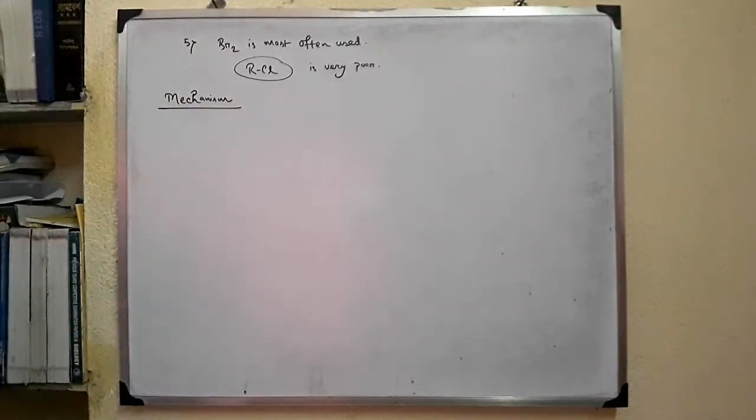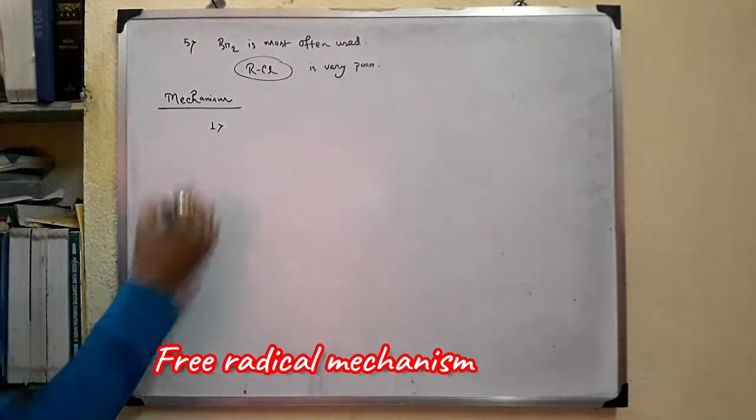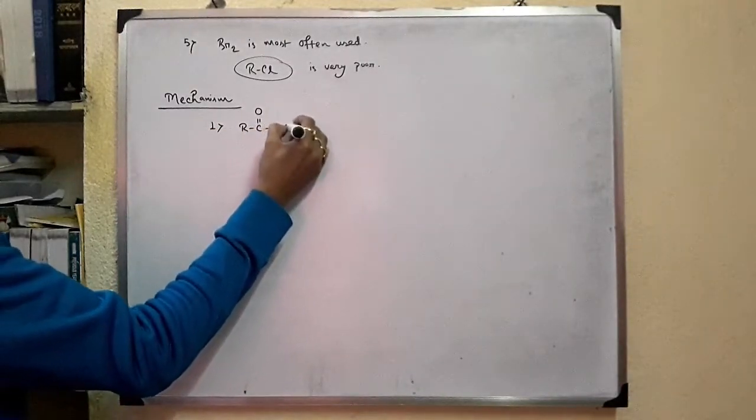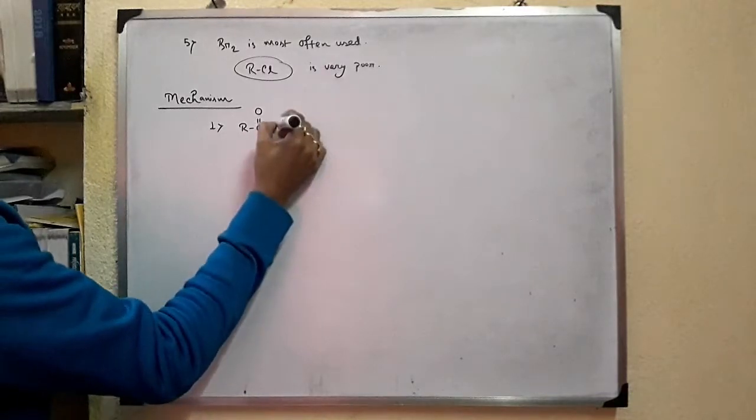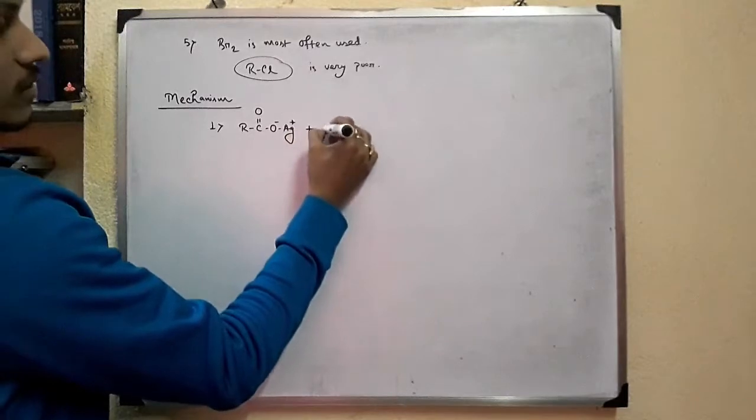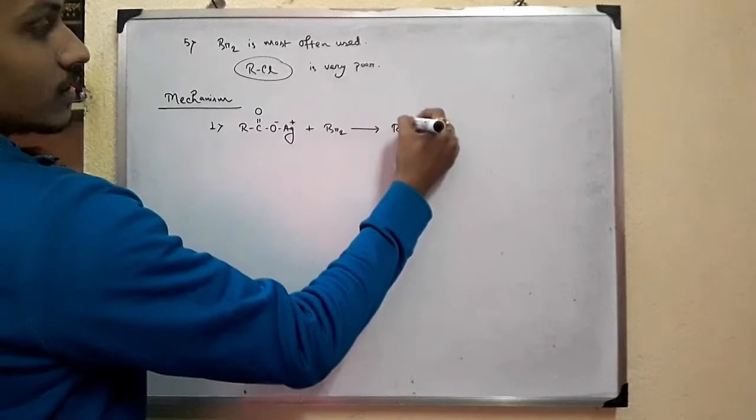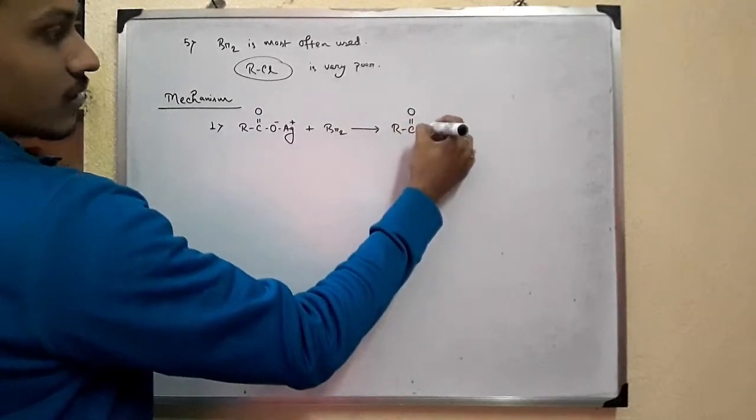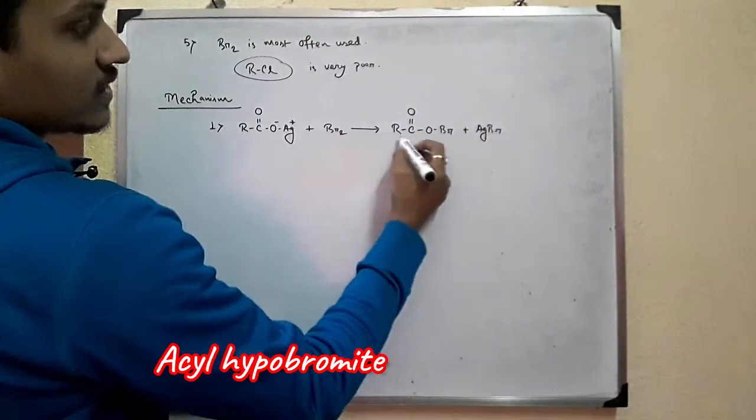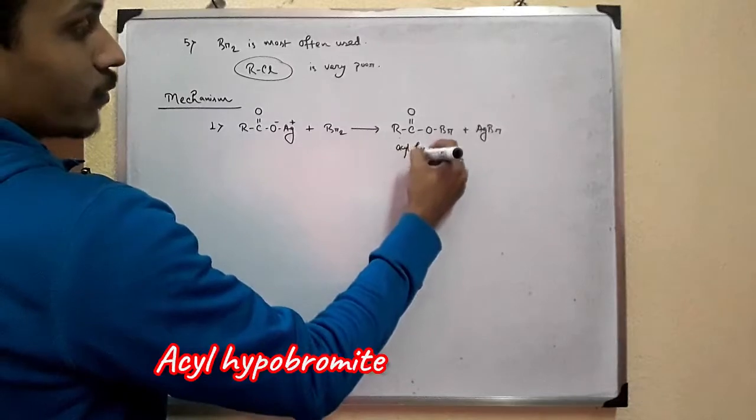Hunsdiecker reaction involves free radical mechanism. In the first step, the silver salt of the acid reacts with bromine to form an intermediate. This is the intermediate, which is known as acylhypobromite.